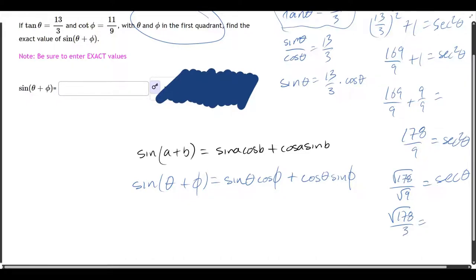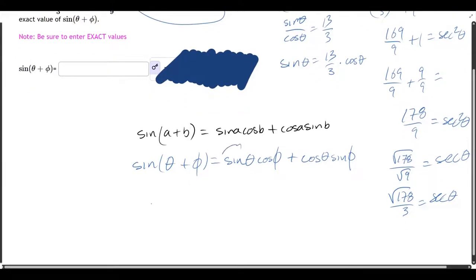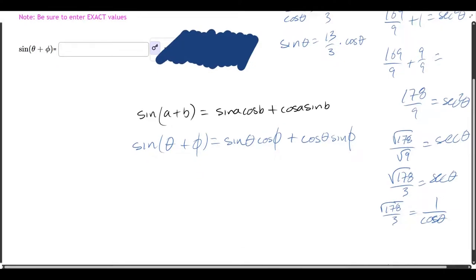However, that is not even what we want. We want sine and we want cosine. So we know the reciprocal of secant is cosine. So secant is 1 over cosine. And now we'll reciprocate both sides. So there's cosine theta. That was cosine theta.